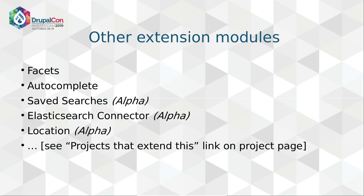There are other extension modules available. Two of the most popular ones are Facets, which gives you faceted search, and the Autocomplete module. There are also several other modules, and on the Search API project page there's a link that will take you to a complete list of all modules that extend Search API in some way. I now want to talk about the Facets module.